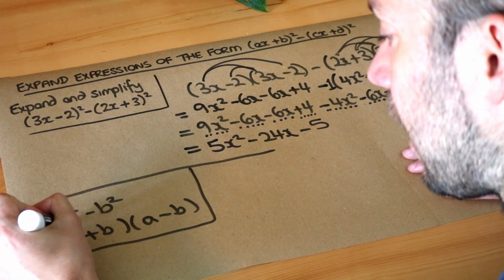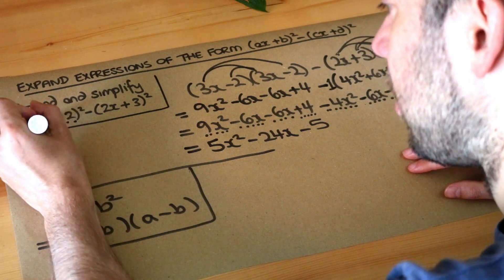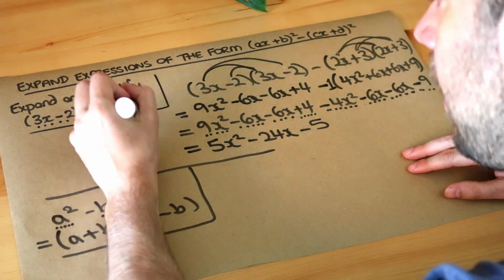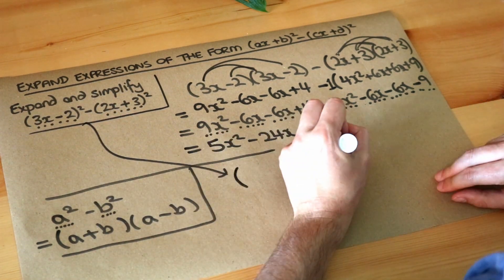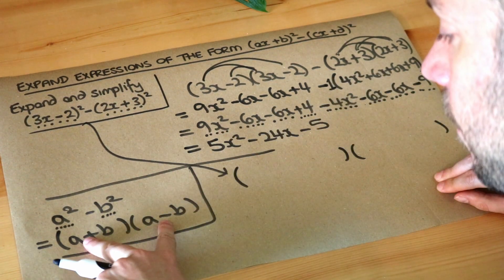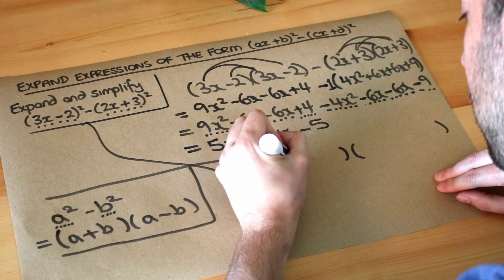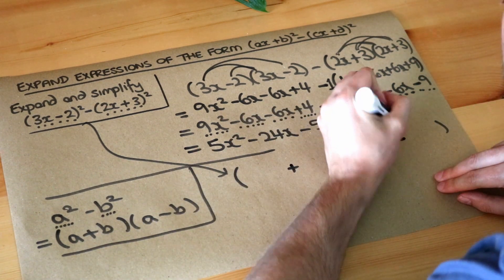So the a here is the (3x-2), and the b here is (2x+3). So what we're going to do is we're going to have two brackets just like we have here. We've got a plus in the middle of one of the brackets and we've got a minus in the middle of the other bracket.